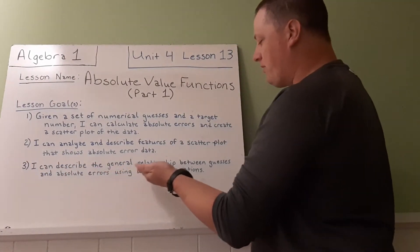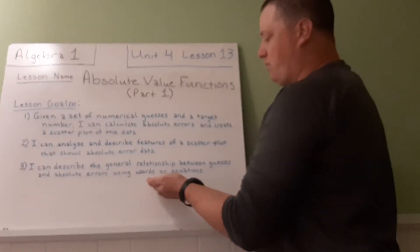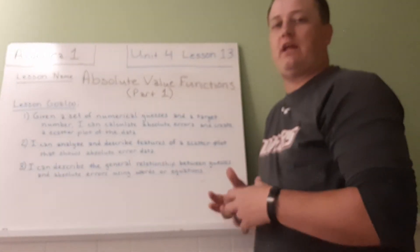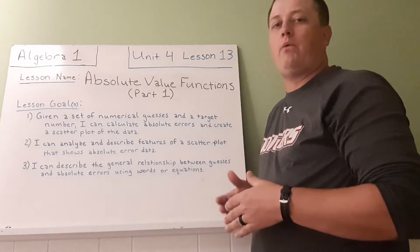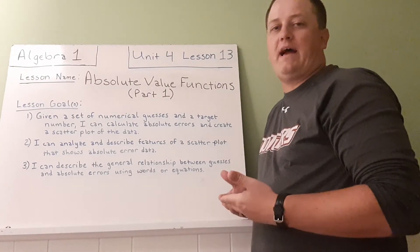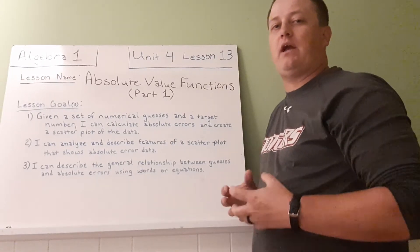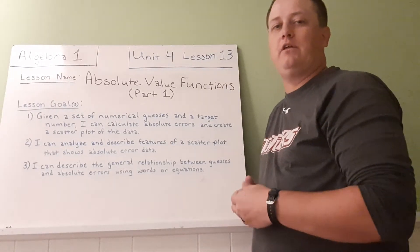I can describe the general relationship between guesses and absolute errors using words or equations. Once we have the graph and we understand the pattern as it's going on, we want to then explain what that shape of the graph is, what the relationship is, and maybe even create some equations to model the situation.